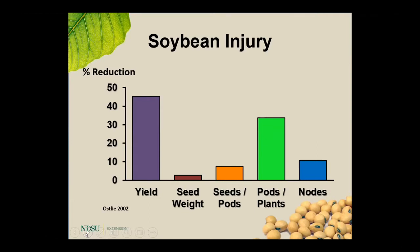High aphid numbers can lead to several different aspects of yield loss. Seed weights will be reduced, you'll probably see lower seed numbers in soybean pods, a reduction in pods developed per plant, and a reduced number of nodes. Bringing all that together, you can get a major yield impact. One study by Dr. Ostley in 2002 showed upwards of 45% yield reduction from high aphid populations — we're talking populations into the thousands.